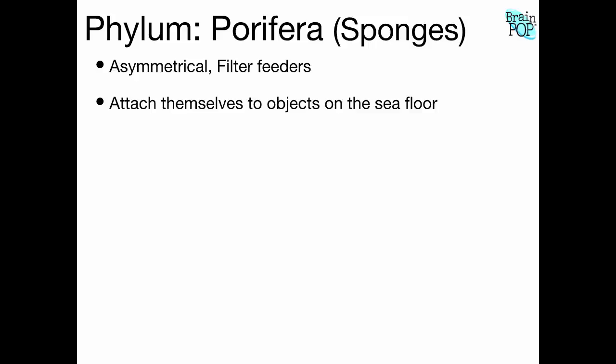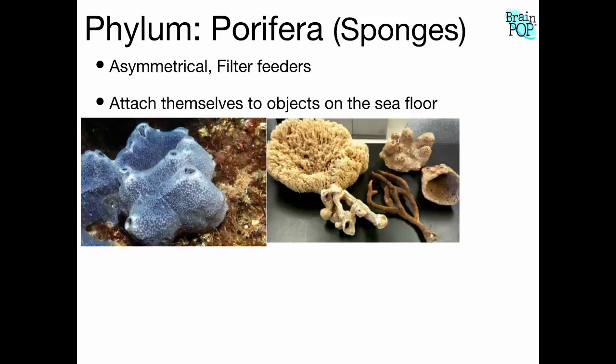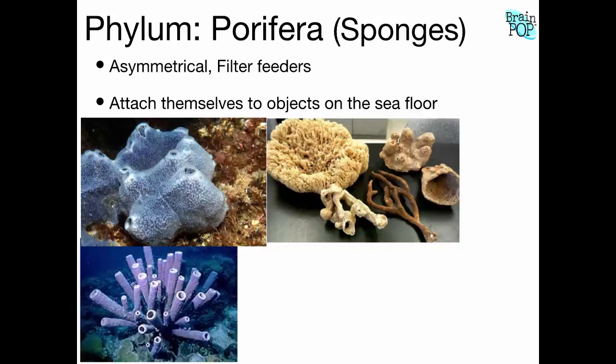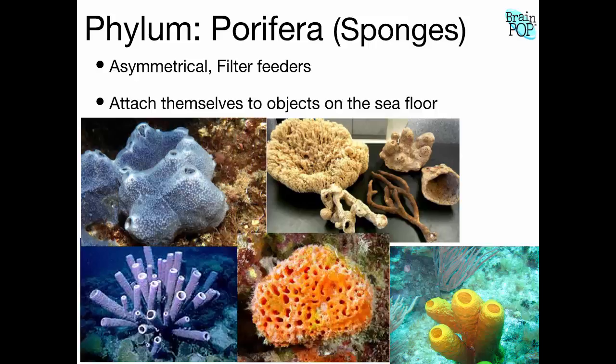Sponges, when they're alive, come in a huge variety of colors, shapes, and sizes. Some are blue, and you can see the tiny little holes where water goes in. On this sponge, it squirts the rest of the water out the top, filtering and getting little bits of food along the way. These are the simplest of animals, but they are animals — they're heterotrophic, multicellular, eukaryotic, and have all the characteristics of animals.